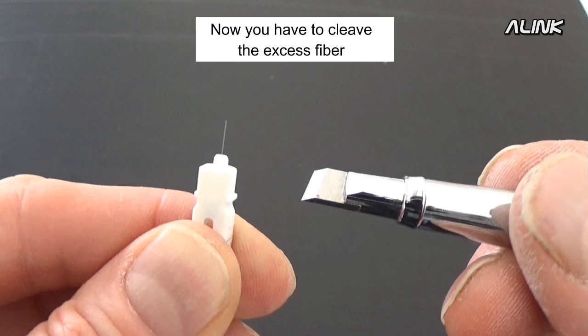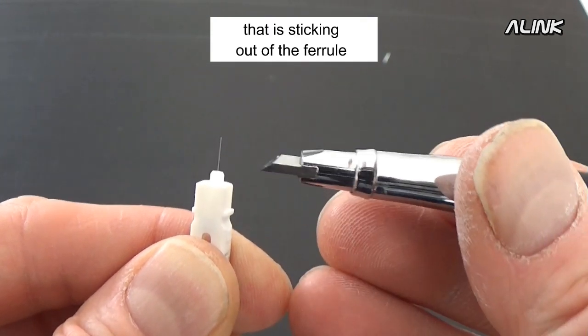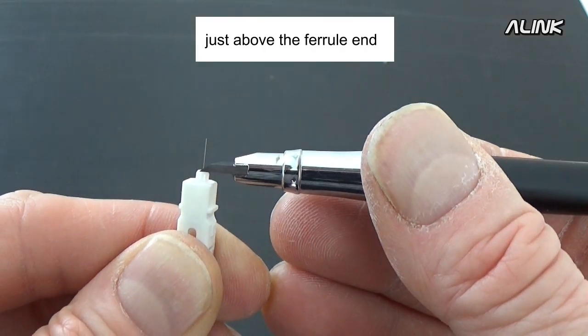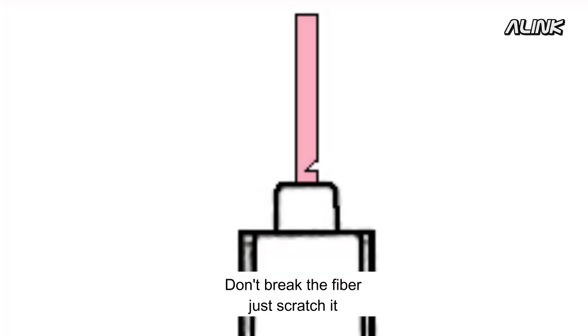Now we have to cleave the excess fiber that's sticking out of the ferrule. With a fiber cutter, gently scratch the fiber just above the ferrule end. Don't break the fiber, just scratch it.